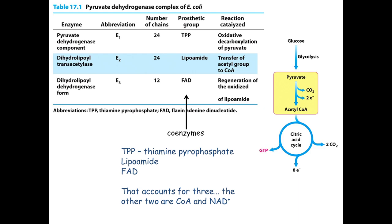What do these cofactors carry? FAD and NAD+ carry electrons. The other three — thiamine pyrophosphate (TPP), lipoamide, and CoA — are all useful for carrying the carbon skeleton along. So we put them into two groups: TPP, lipoamide, and CoA carry the carbon skeleton, while FAD and NAD+ carry away the electrons.